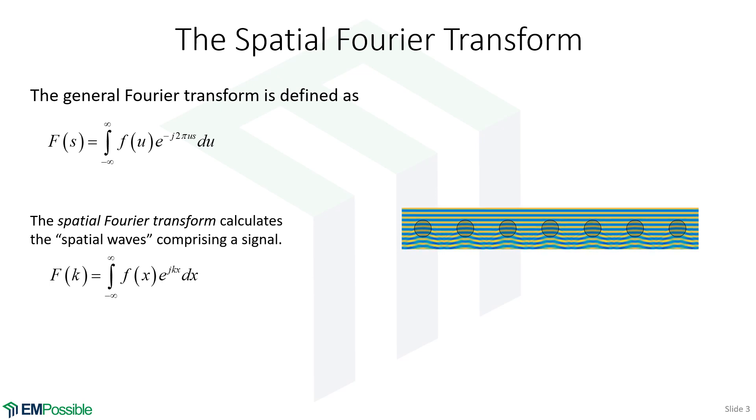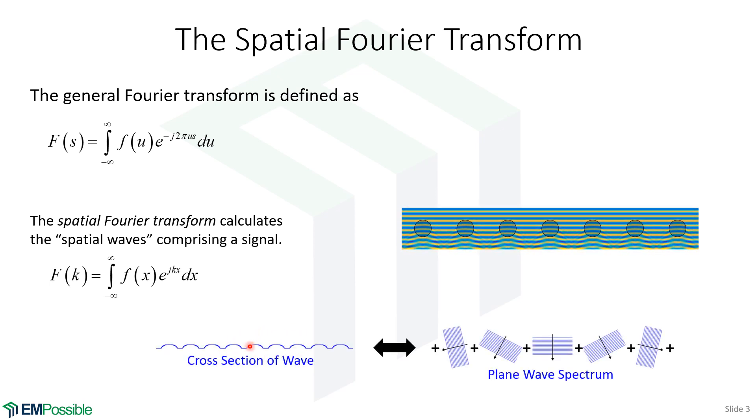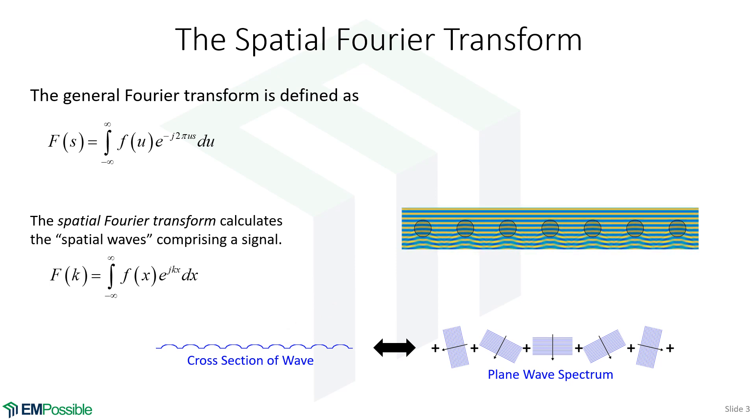Now, we can extract a cross-section of this. And here's where I'm showing that cross-section approximately. And we can Fourier transform that.